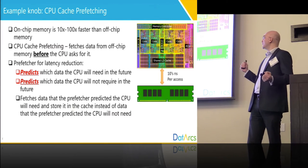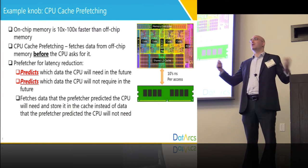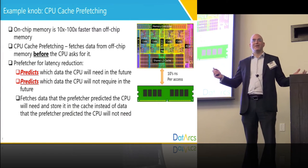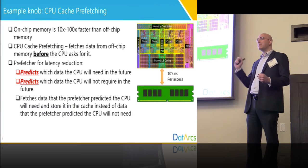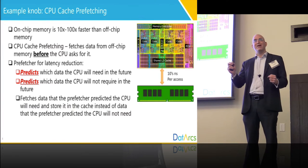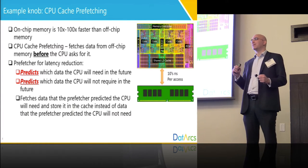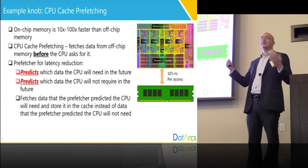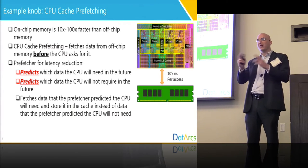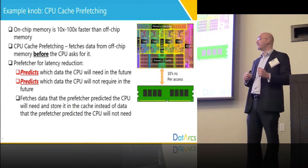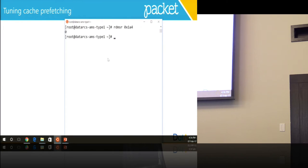CPU prefetchers perform very well today — really good. But in some cases they don't perform that well. In recent processor generations, you can actually toggle prefetching on and off. Now we're reading the state of the prefetchers. We read it at zero, which means that the prefetchers are currently on.